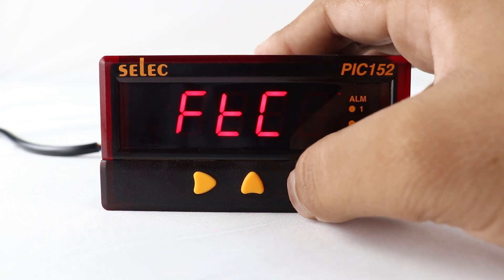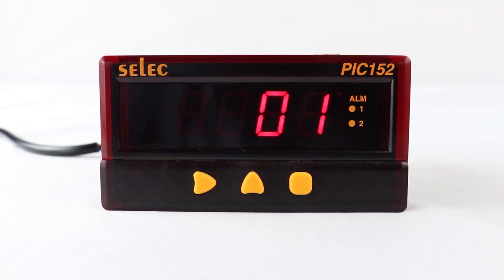Then press square key, next parameter is filter time constant, which discriminates between measurement noise and actual process change. If the signal is varying too greatly due to measurement noise, increase the filter value, and vice versa. FTC ranges between 1 to 99 seconds.